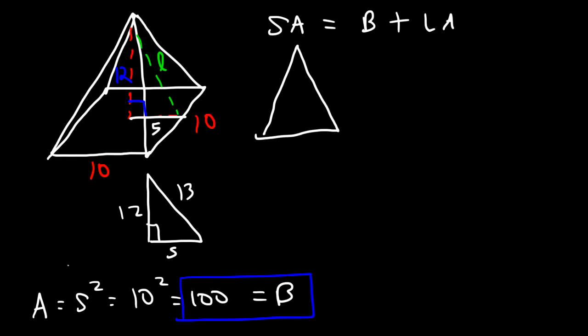So this triangle here is basically this triangle that you see right here. It's one of the four triangles. So we have the slant height, which is L. That's the height of this triangle. That's 13. And the base of this triangle is 10. So now we can calculate the area of that triangle.